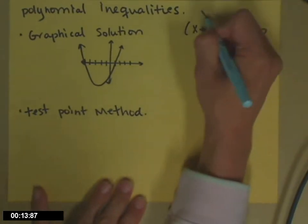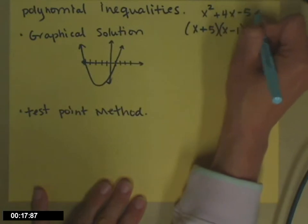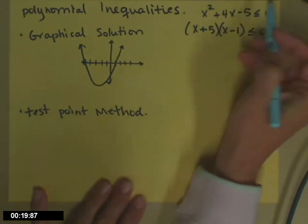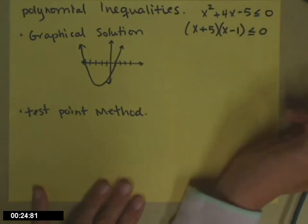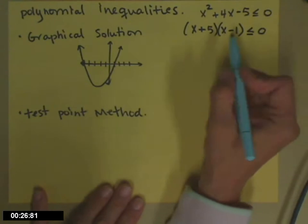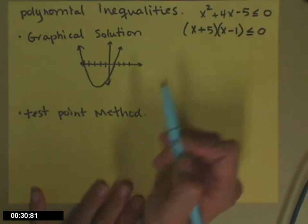I've shown it to you factored here. In its unfactored form, it would look like this. So I have a polynomial, I have an inequality symbol, and typically I'll have a zero on the other side. So for what values of x is this polynomial less than or equal to zero?